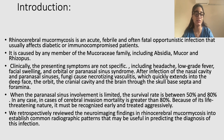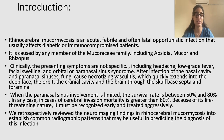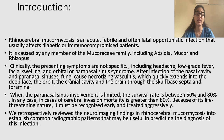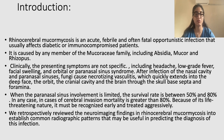After the infection of nasal cavity and paranasal sinuses, the fungi tend to cause necrotizing vasculitis, which quickly extends into the deep face, the orbit, the cranial cavity, and the brain through the skull base septum foramen. When the paranasal sinuses are involved and it is limited to only the paranasal sinuses, the survival rate is 50% to 80%. However, in any case where there is cerebral invasion, mortality is greater than 80%. We retrospectively reviewed the neuroimaging in the case of rhinocerebral mucormycosis to establish common radiographic patterns in predicting the diagnosis and the infection.